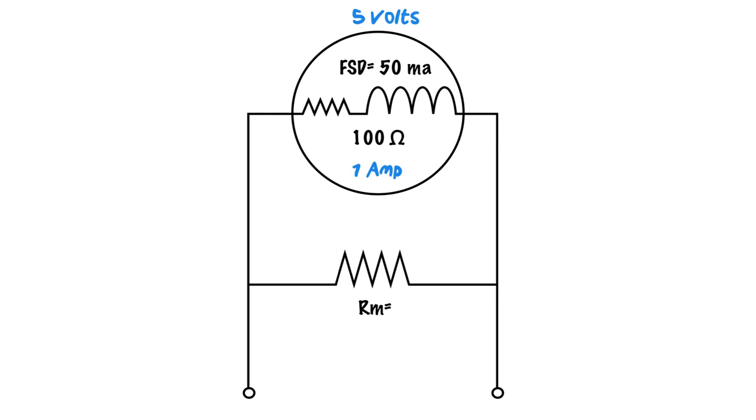Our first step to do that would be to calculate 50 milliamps times 100 ohms. Using Ohm's law means that we will be seeing 5 volts across this coil. So when we have full-scale deflection, 50 milliamps flowing through here, we will see 5 volts.